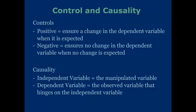Causality. There are two variables that go into causality. The first is the independent variable, which is the variable that is manipulated. The dependent variable is the observed variable that hinges on the independent variable. Oftentimes, the dependent variable is the area of interest for a study.